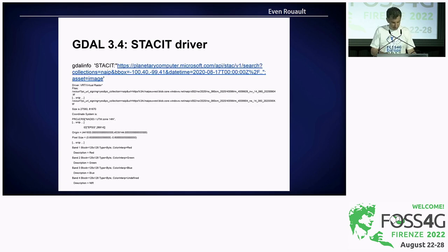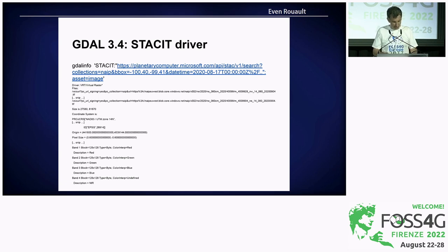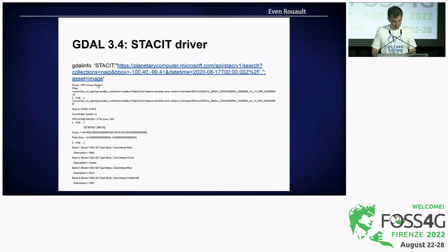Here I have presented an example of a query against the STAC API implementation of Microsoft Planetary Computer. The query has a filter on the collection of interest, the bounding box, and the date/time range you are interested in. It's reported as a VRT dataset — a virtual raster — and you have the list of all tiles that participate in this request, along with the usual metadata you can find on a GDAL dataset.